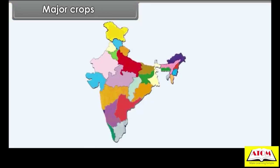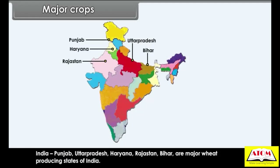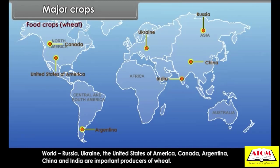Production areas — India: Punjab, Uttar Pradesh, Haryana, Rajasthan and Bihar are the major wheat-producing states. World: Russia, Ukraine, the United States of America, Canada, Argentina, China and India are important producers of wheat.